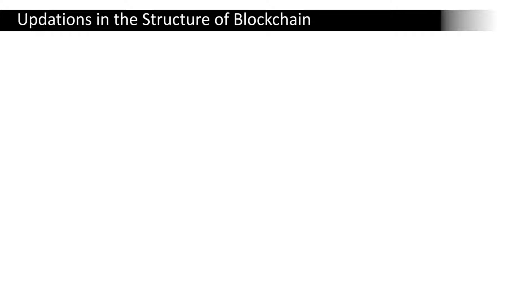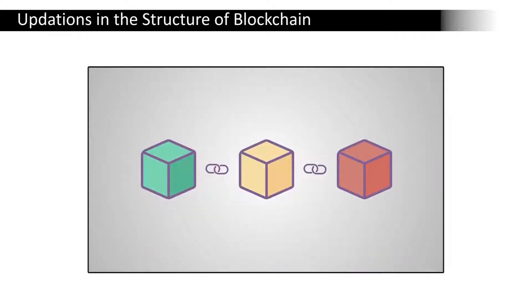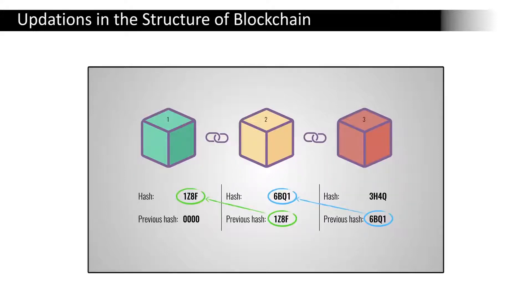Blockchain is a technology consisting of a sequence of blocks that holds a complete list of transaction records, like a conventional public ledger. The first block of a blockchain is called the genesis block, which has no parent block. A block consists of a block header and a block body with the following fields.